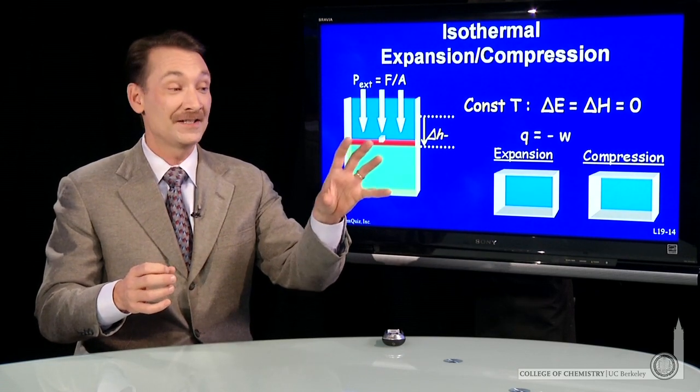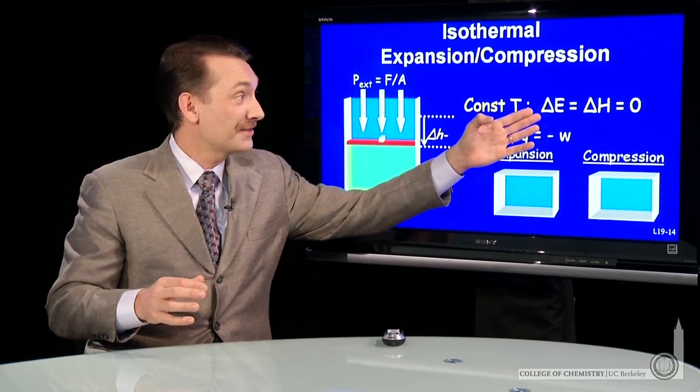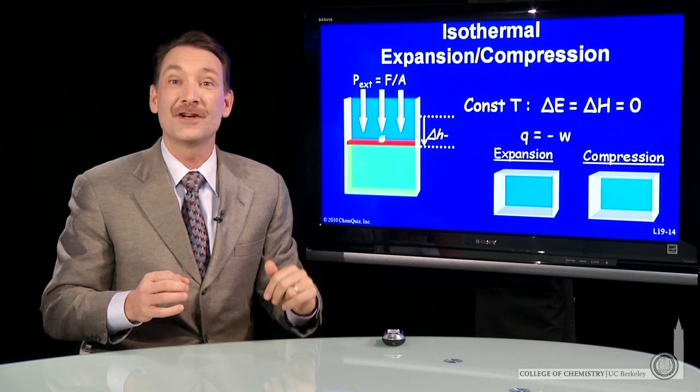Remember, the energy of an ideal gas is 3 halves nRT. So for isothermal processes, delta E and delta H are zero.